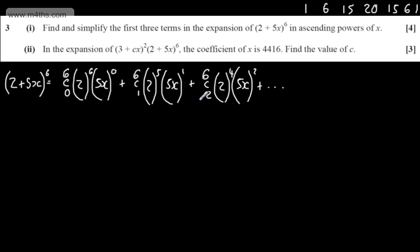Plus dot dot dot, and so on and so forth. So this is going to give me 1 multiplied by 2^6, which is 64, multiplied by 1. Then we're going to have 6 multiplied by 2^5, which is going to give me 32, multiplied by 5x.